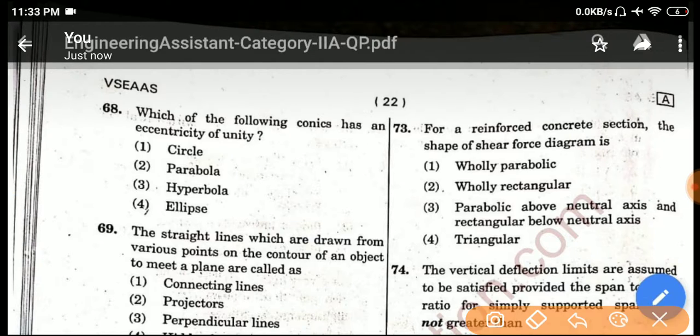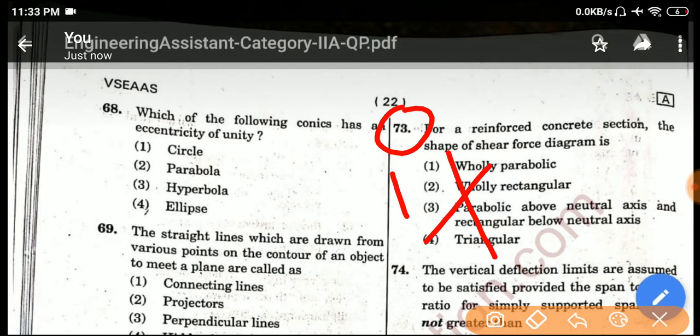Here, question number...actually this is Set A question paper, Set A answer key. In Set A, question number 73, they have rejected all these options, so one mark is given to everyone.